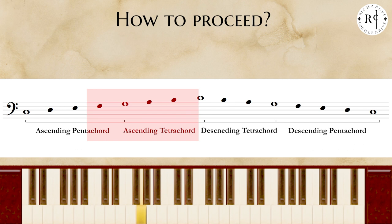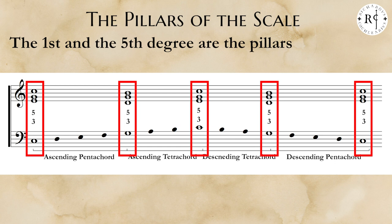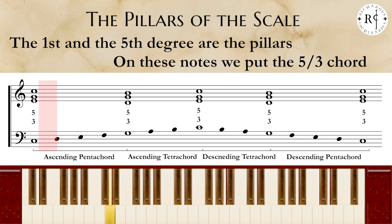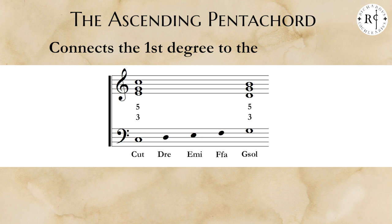The first and the fifth degrees of the scale — marked as white semibreves — are like the pillars of the rule of the octave. On these notes, we put the octave, and on these notes we put the third and fifth chord.